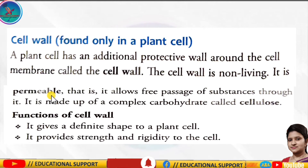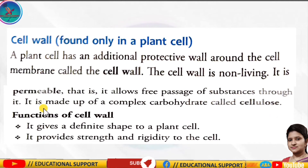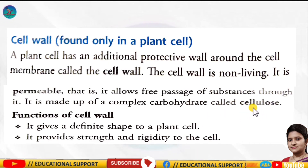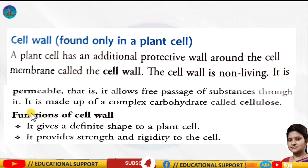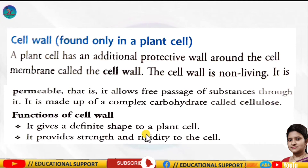The cell wall is permeable — meaning it allows free passage of substances through it. This cell wall is made up of a complex carbohydrate called cellulose. Please underline this and remember it. The cell wall gives a definite shape to a plant cell.